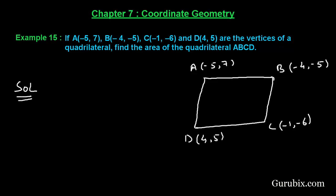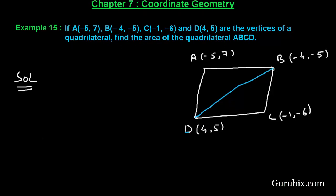First of all we shall draw a diagonal. We can draw any of the two diagonals AC or BD. So we have joined the points B and D. Now we shall first find the area of triangle ABD, then the area of triangle BCD, and finally we shall add them.